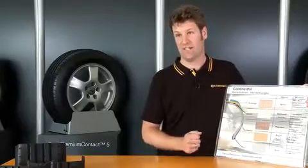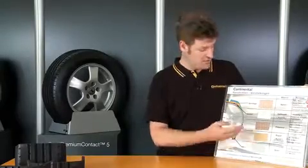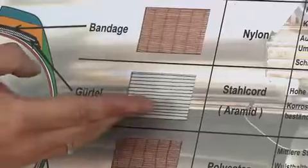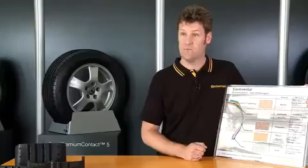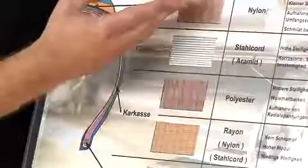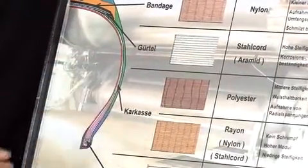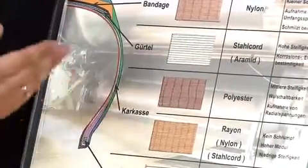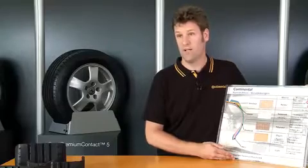We build a number of structural supports into each tire. The belts and beads, for example, are made from steel, while textiles such as nylon, polyester and rayon are used in the carcass. If we didn't build these structural supports into the tires, they would lose their form and inflate like a balloon.